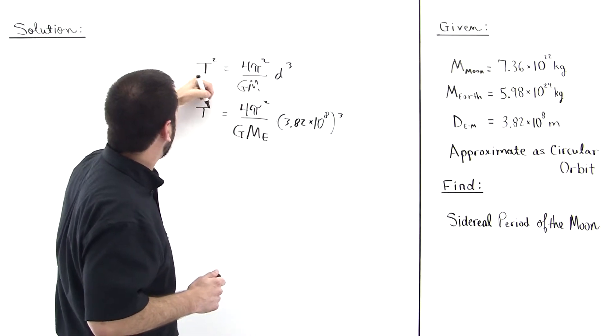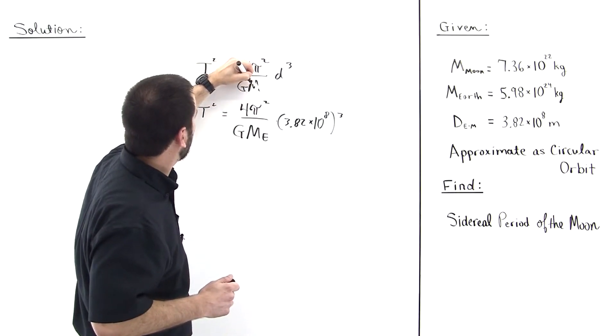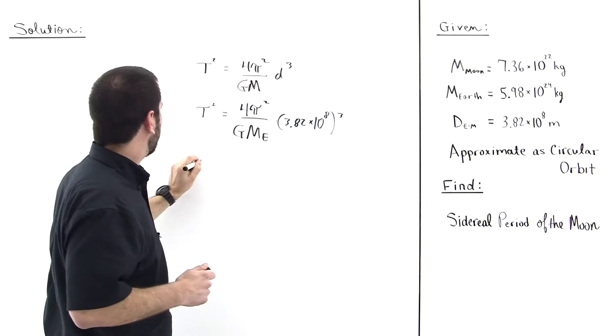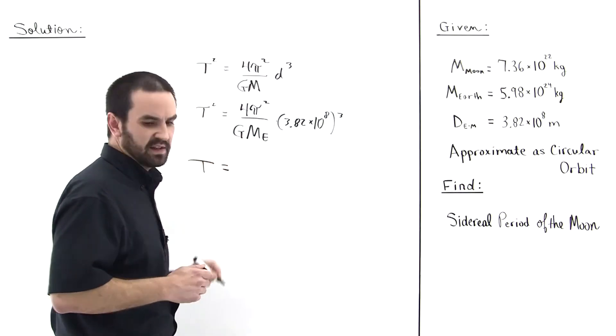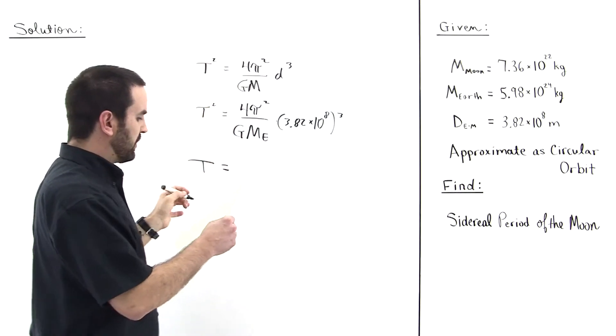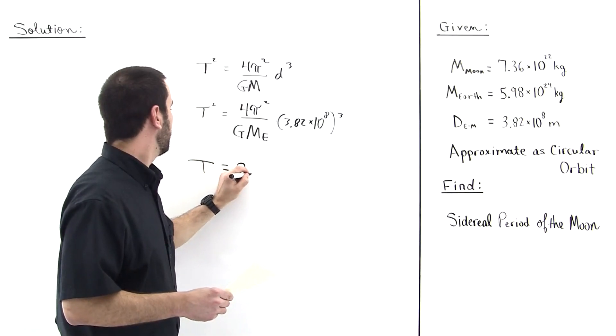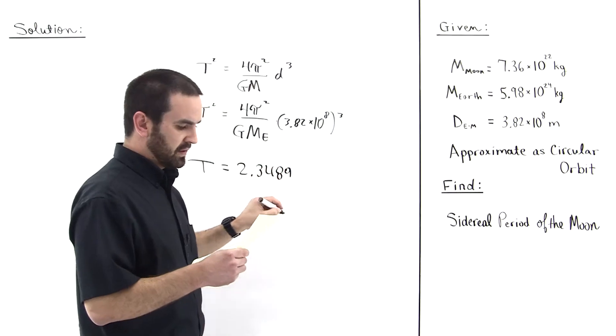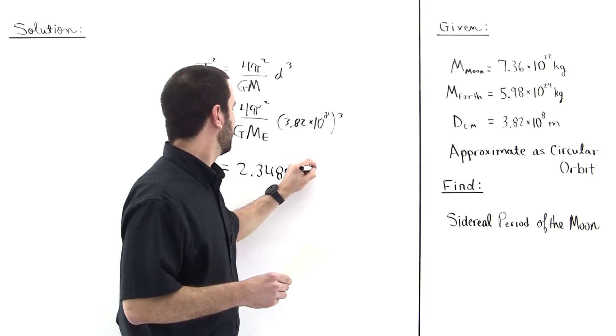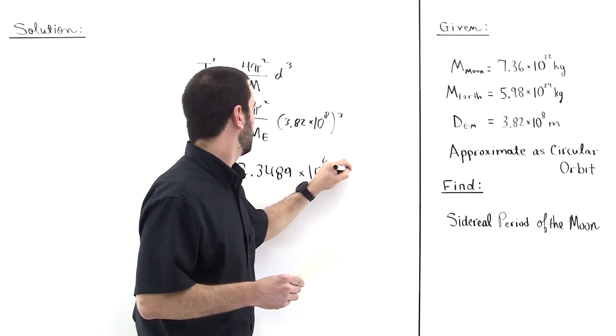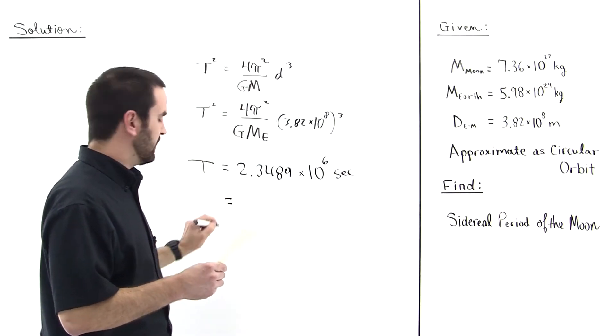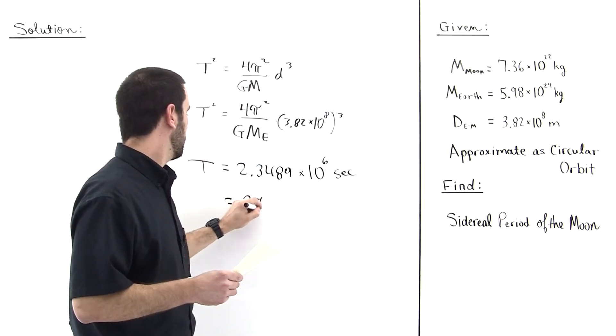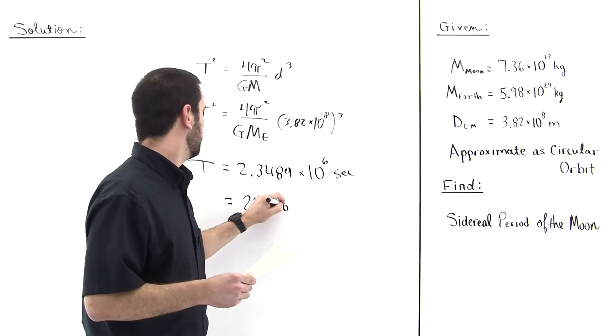So this is T squared, and then T, the period, is equal to 2.3489 times 10 to the 6th seconds. We convert that to days, and we will achieve 27.2 days.